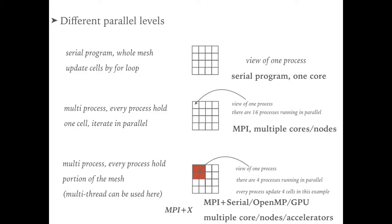For this video, we mainly focus on the second case, and every process will hold one cell and to process the data associated with this cell. Let's see how to use this method to solve the Poisson equation in parallel.